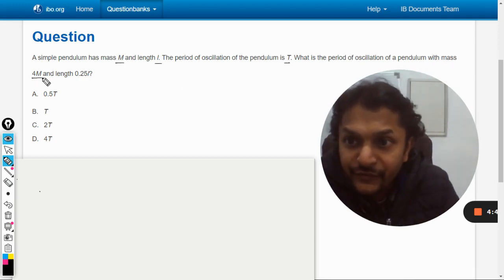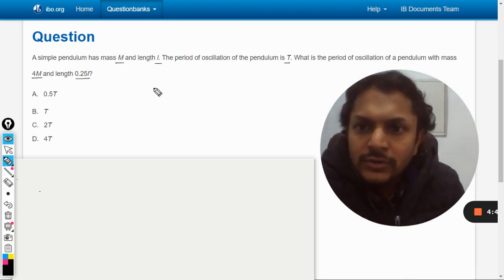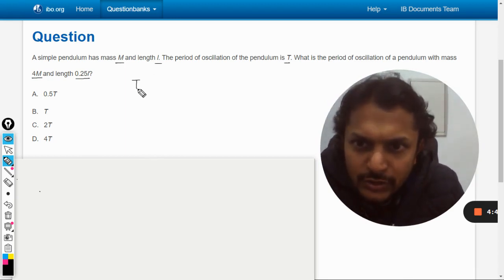with mass 4m and length 0.25L? So in this question, we are just going to apply the formula directly and this formula is already given in your data booklet. So this is case number one.